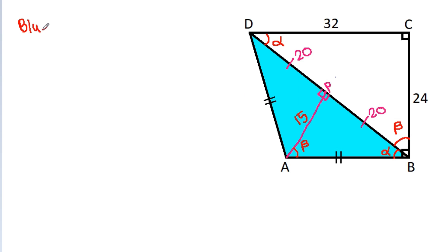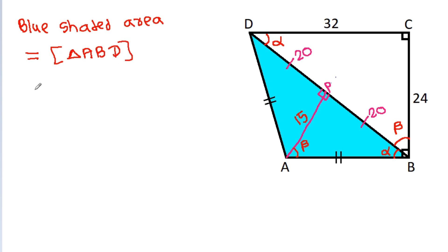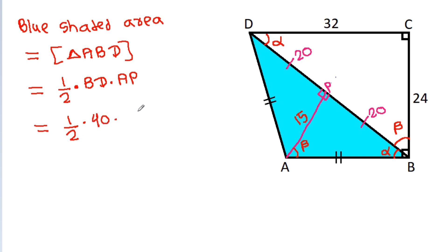The blue shaded area equals the area of triangle ABD, which equals one half times base BD times height AP. That is one half times 40 times 15, and since 2 times 20 is 40, the result is 300.